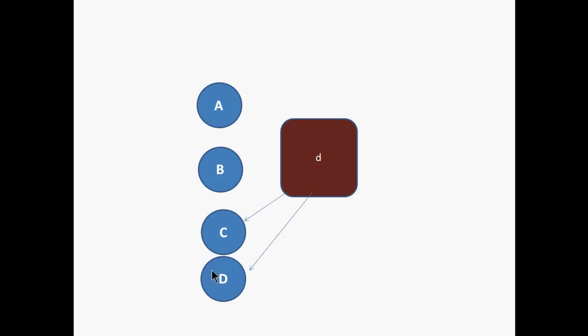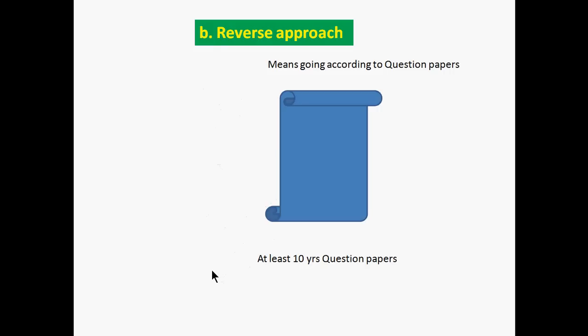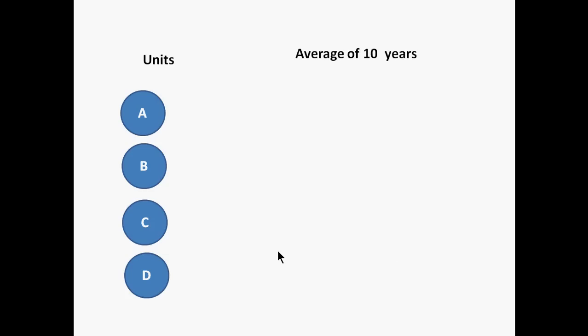This will be the order and ranking on how you can prioritize your reading. The second approach is the reverse approach. This means you go according to question papers. Take at least 10 years of question papers. After analyzing 10 years of question papers, you'll find that different units cover different frequency of questions. Like unit A is asked 25 to 35 percent many times, unit B covers 15 to 20 percent of asked questions during 10 years, and so on.